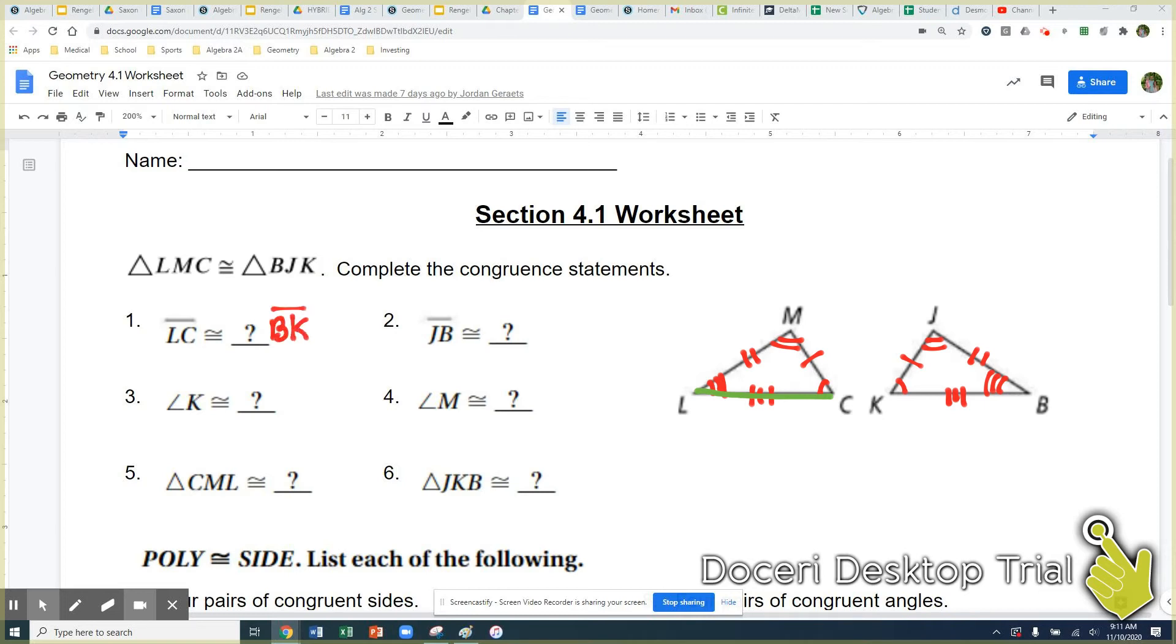If you put KB that would be incorrect. So B is the side that matches up with L or start of the angle. C is the angle that matches up with K. So we've got to go in the same order.